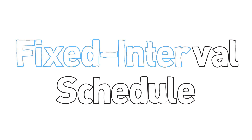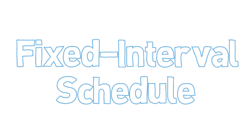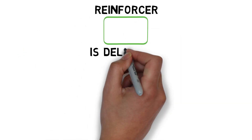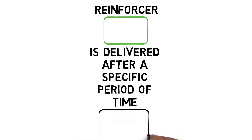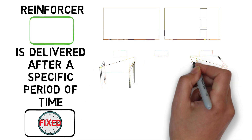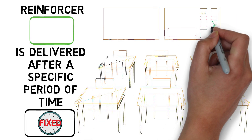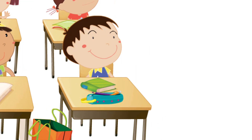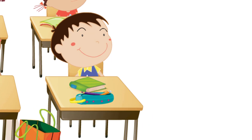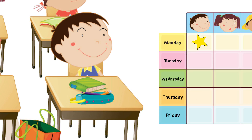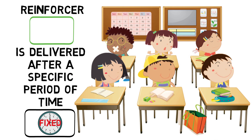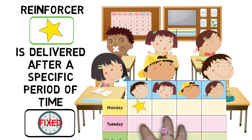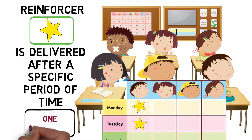In a fixed interval schedule of reinforcement, the reinforcer is delivered after a specific or fixed period of time. For example, Joel's teachers have worked to put together a specialized behavior modification program for him. At the end of the school day, if Joel was a good listener and played nicely with others, he gets a star on his star chart. In this case, Joel can earn a star after a fixed period of time — one school day.